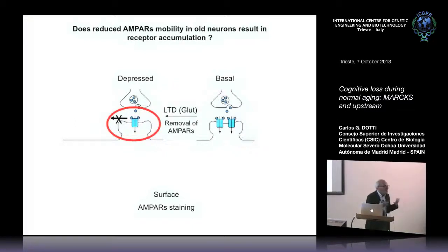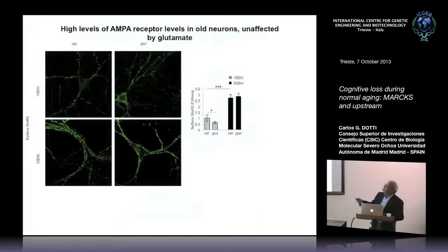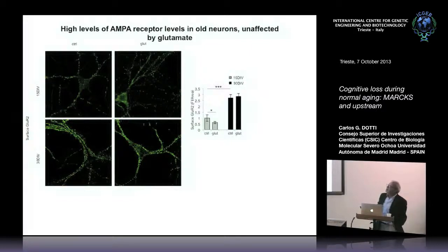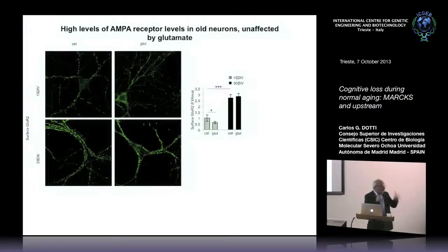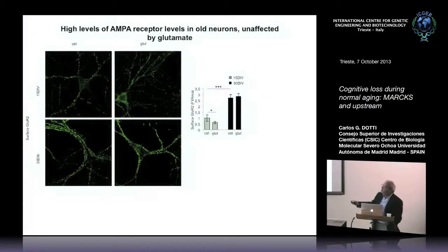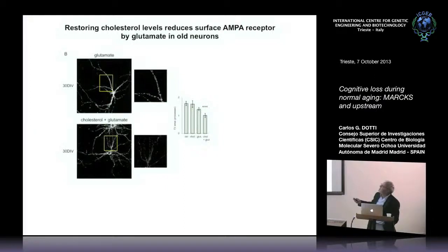In 30-day in vitro neurons compared to 15-day neurons, you have much more receptor on the surface even though total receptor levels are the same. In the presence of glutamate, receptors become internalized in 15-day in vitro neurons, but do not become internalized in 30-day in vitro neurons — consistent with what we saw for lateral diffusion. And by restoring cholesterol, we lose the labeling from the surface, meaning cholesterol helps internalization.